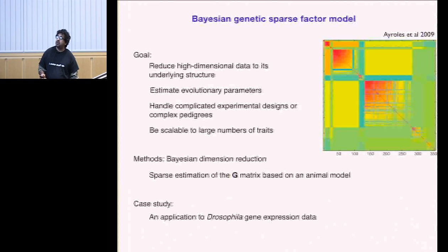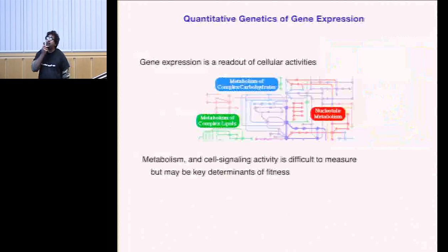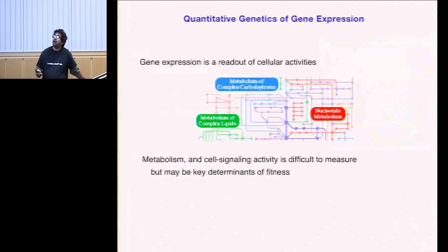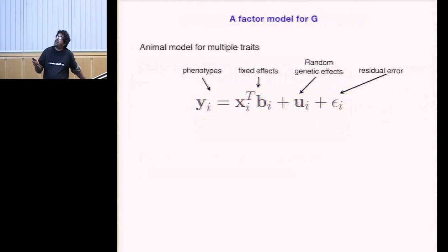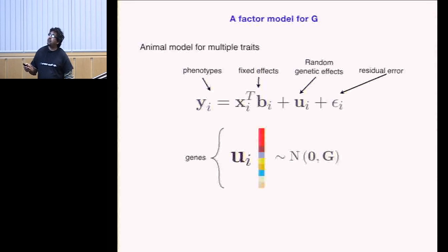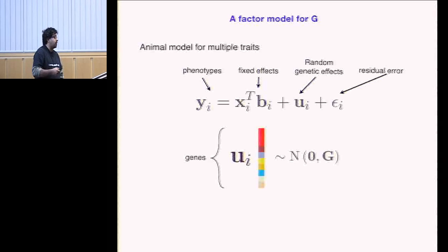If we look at gene expression, it can be thought of as broken into different parts — different cellular activities that give rise to expression — so it's reasonable to think of it as a modular process. In the animal model, these are my phenotypes, these are fixed effects like gender, this is the random genetic effect, and this is residual error. The random genetic effect comes from a multivariate normal with mean zero and covariance G — my additive genetic variance-covariance matrix.